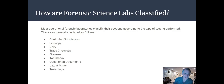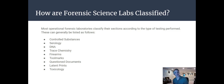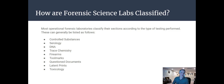Most operational forensic science laboratories classify their sections according to the type of testing performed. Within a forensic laboratory you have different divisions: a group of scientists that work on controlled substances, serology, DNA, trace chemistry, firearms, tool marks, questioned documents, latent prints, and toxicology. These are generally the major categories that you see in forensic science.